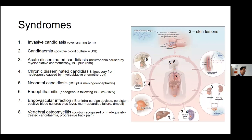Vertebral osteomyelitis is sometimes recognized several months after unrecognized or inadequately treated candidemia. Patients usually present with progressive back pain, and the diagnosis is usually only made once a biopsy is done or at the time of surgery when pus is collected and cultured.